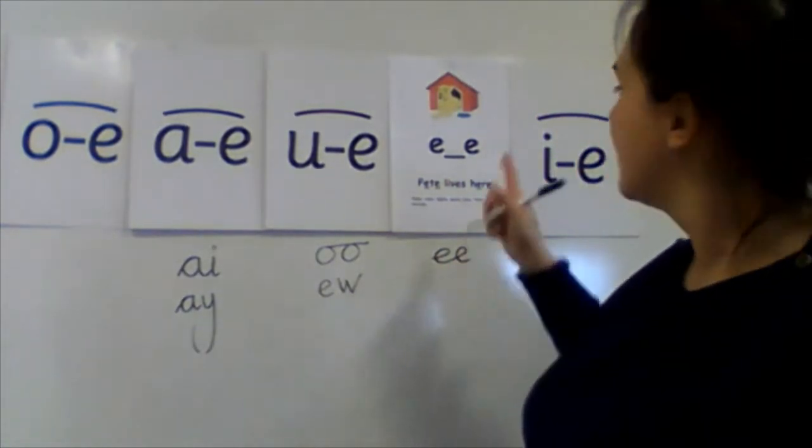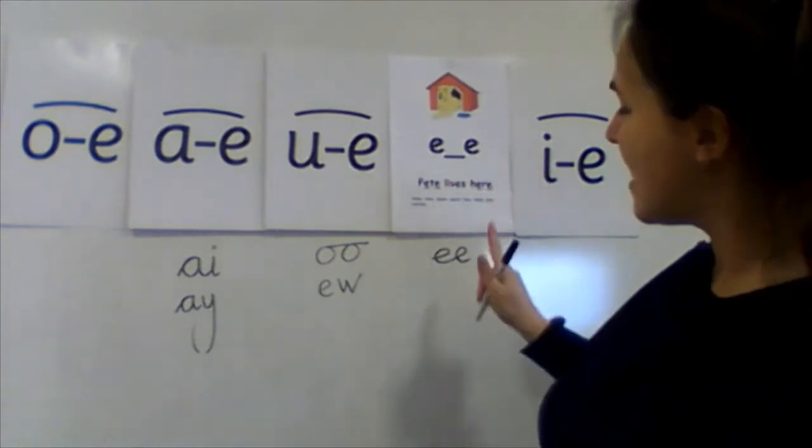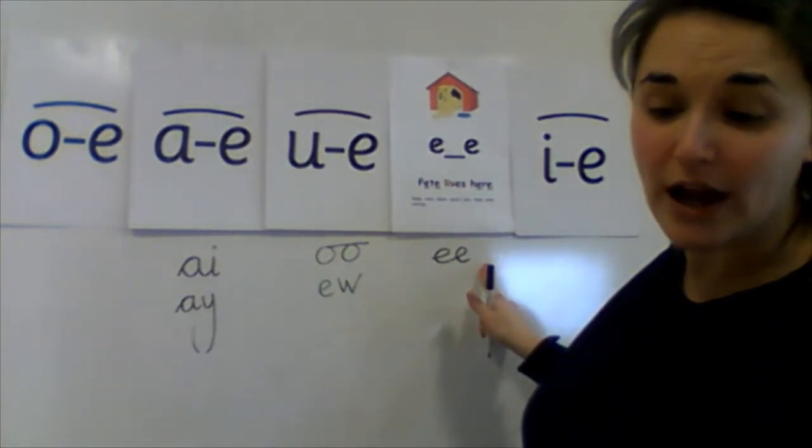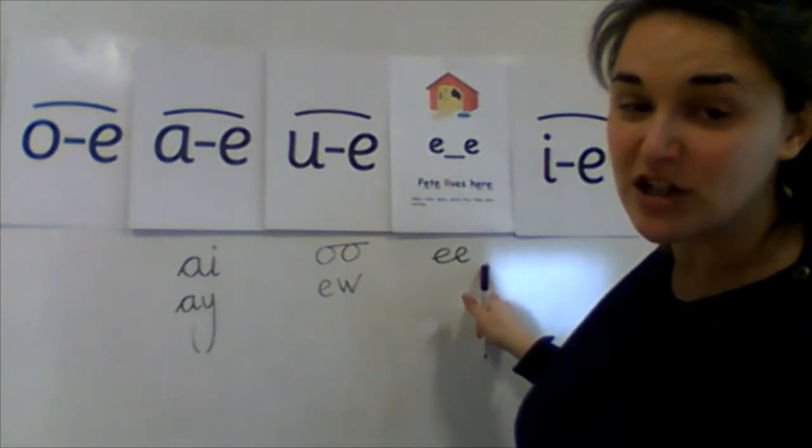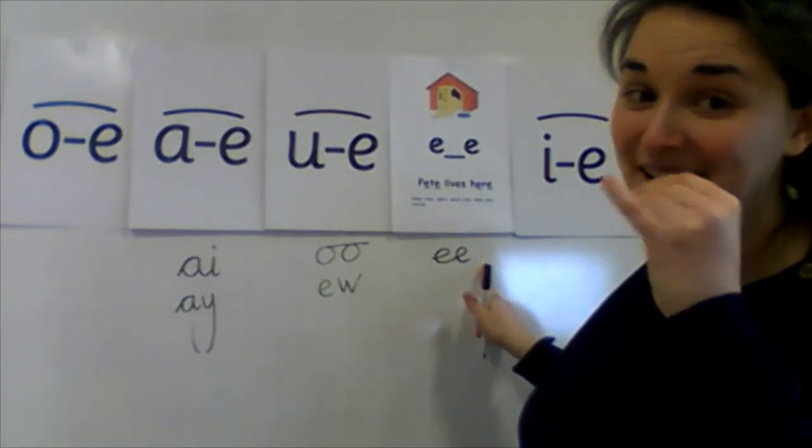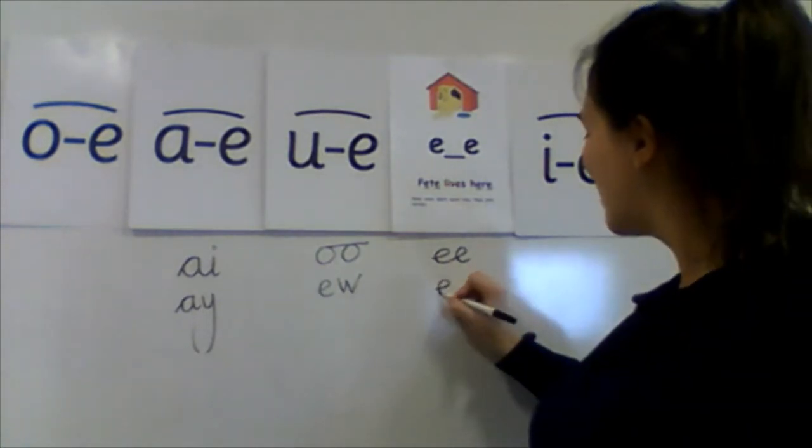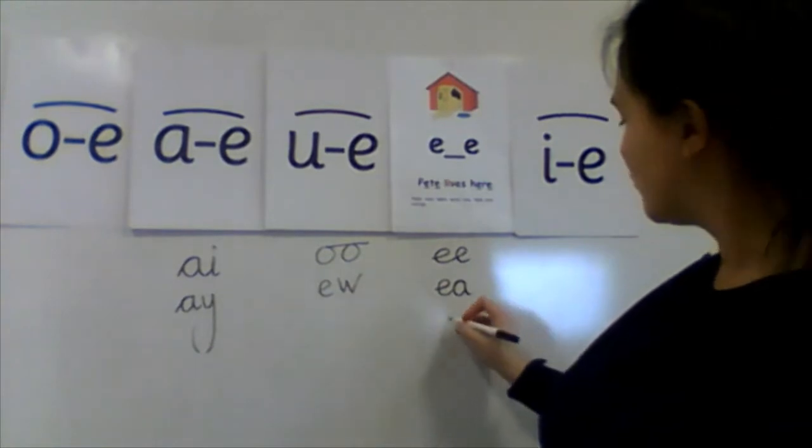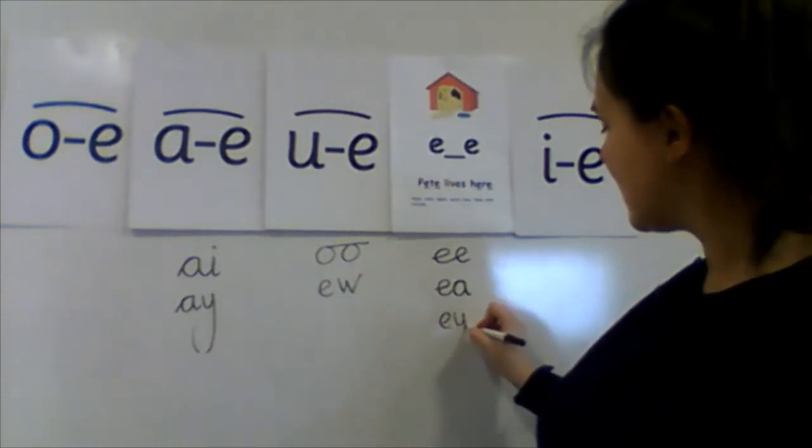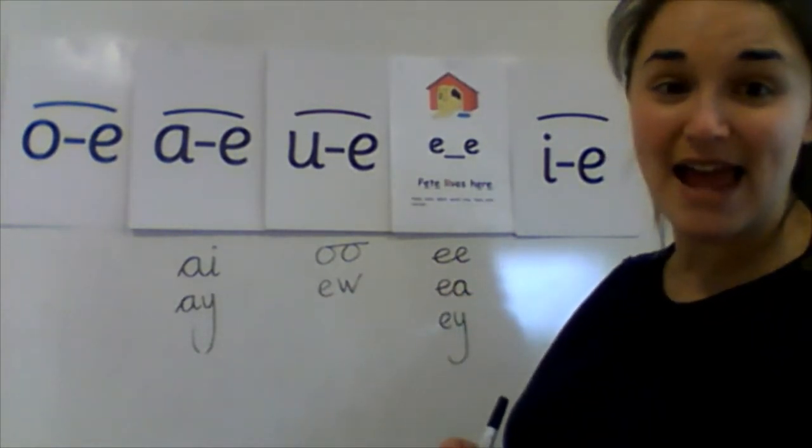E-E Pete lives here. E-E what can you see? Do we know any other ways? One of Miss Richardson's favourites. E-A a cup of tea. We've also got E-Y a jockey playing hockey.